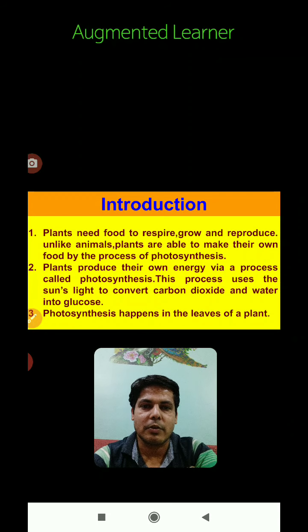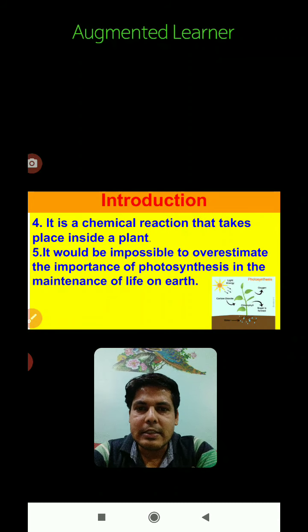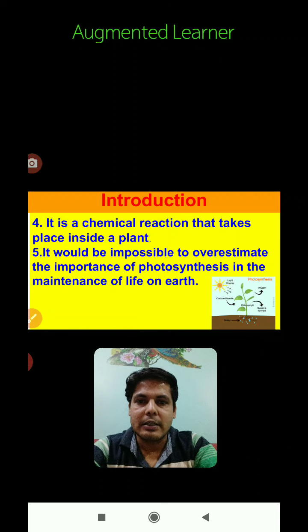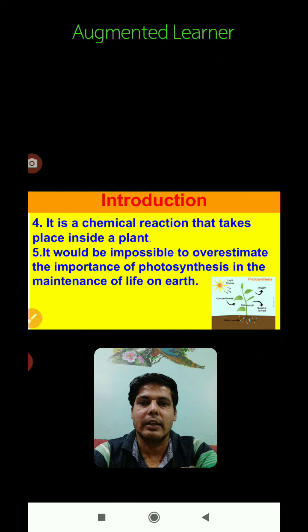This process uses sunlight to convert carbon dioxide and water into glucose. Photosynthesis happens in the leaves of a plant. It is a chemical reaction that takes place inside a plant. It would be impossible to overestimate the importance of photosynthesis in the maintenance of life on earth.